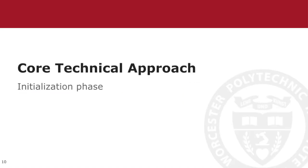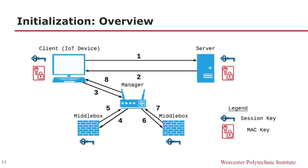Next, I will discuss the core technical approach we took, starting with the initialization phase. There are four system components when using IFTLS: the client, which is a smart device whose traffic will be examined; the manager, which is responsible for configuring IFTLS and expected to run on the local network gateway, that is, the router; trusted middleboxes that the user delegates to inspect the IoT device traffic; and finally, the server, which the IoT device is communicating with. This example is between one client and one server, but there can be multiple devices, and they would all go through the same manager.